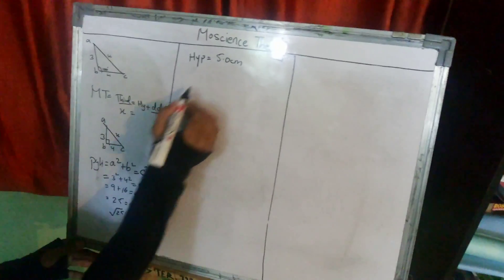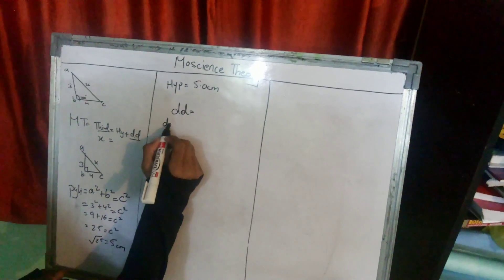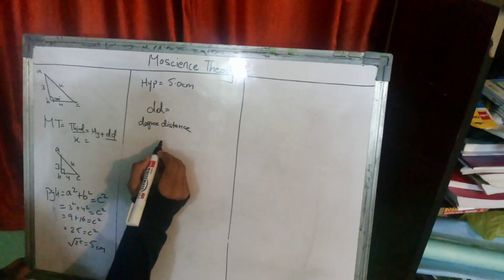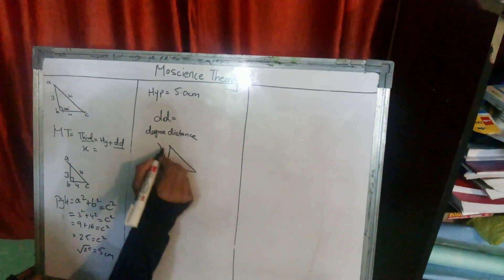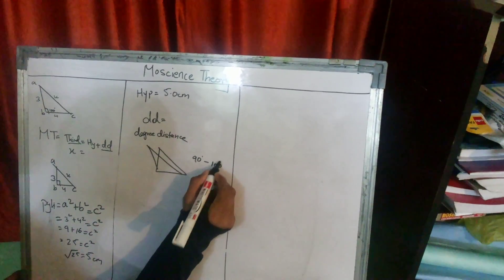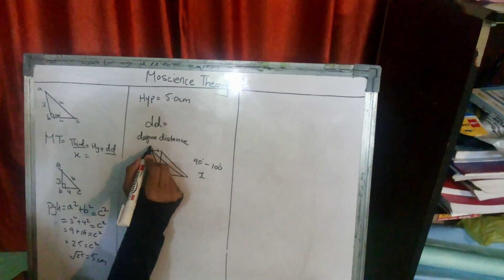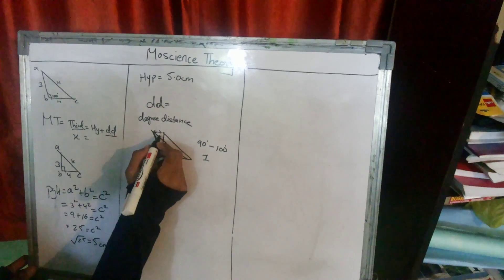Now the third is degree distance. Degree distance concept is: degree distance is 90 degree and 100 degree difference. Just 10 degree distance is complete.